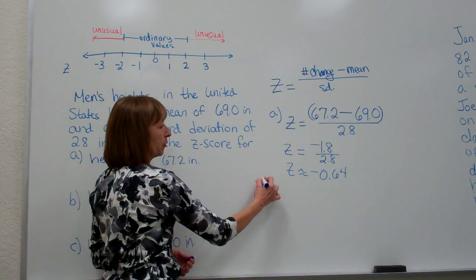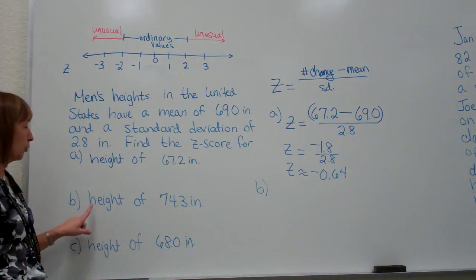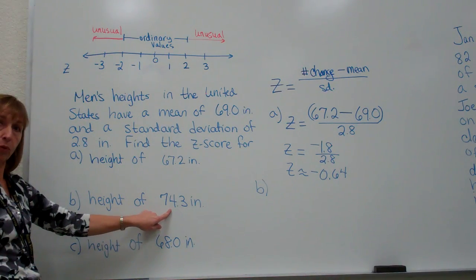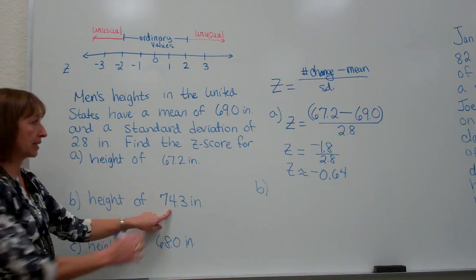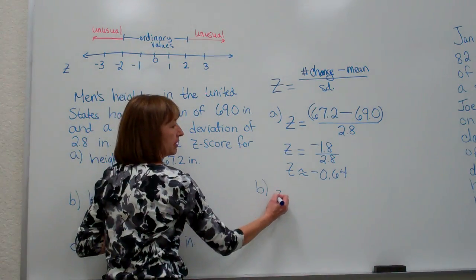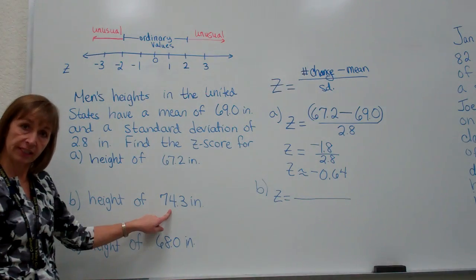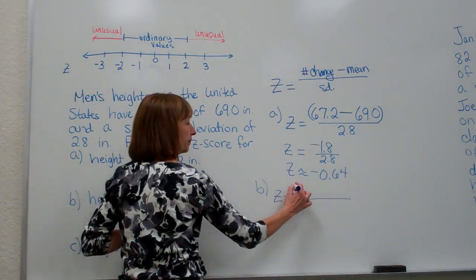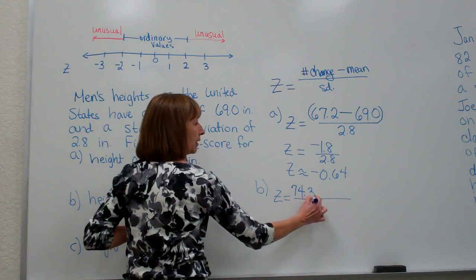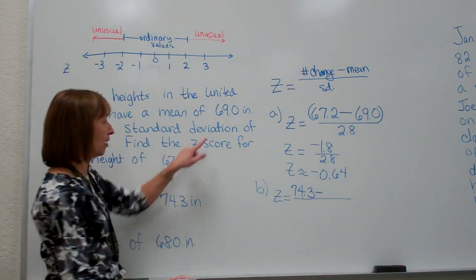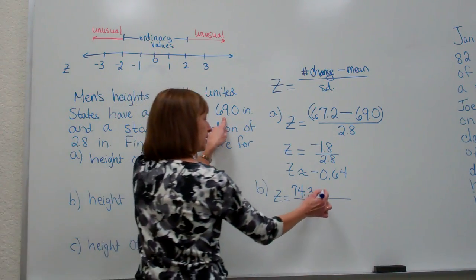Now let's do the second part B. Here we want to take a height of 74.3 inches and change it to its z-score. So our z is equal to 74.3 minus the mean of our data set, 69.0...